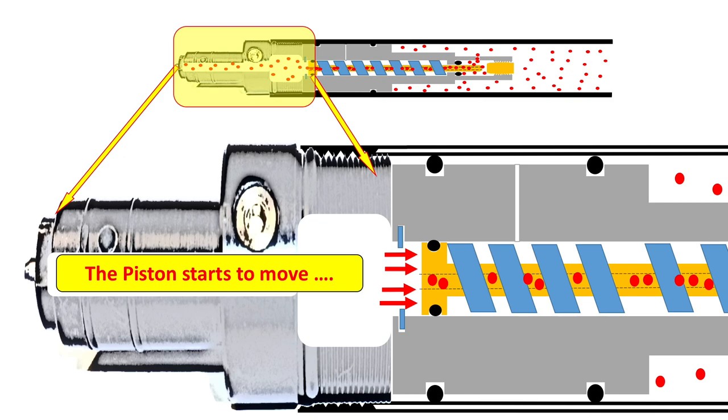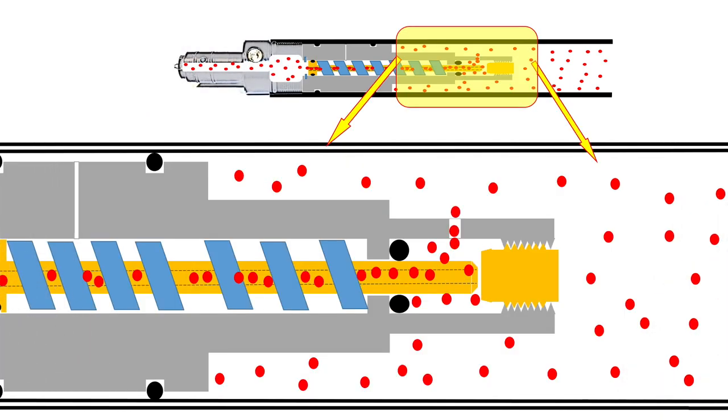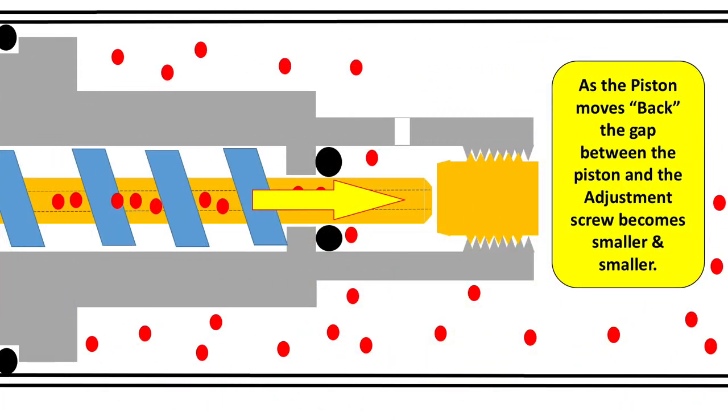As the piston starts moving towards the right, we have to now focus again on the air intake side, more specifically where the knife edge of the piston stem and the adjustment screw is located. As the piston moves back, this gap between the piston and the adjustment screw obviously becomes smaller and smaller. That's the gap I'm referring to.